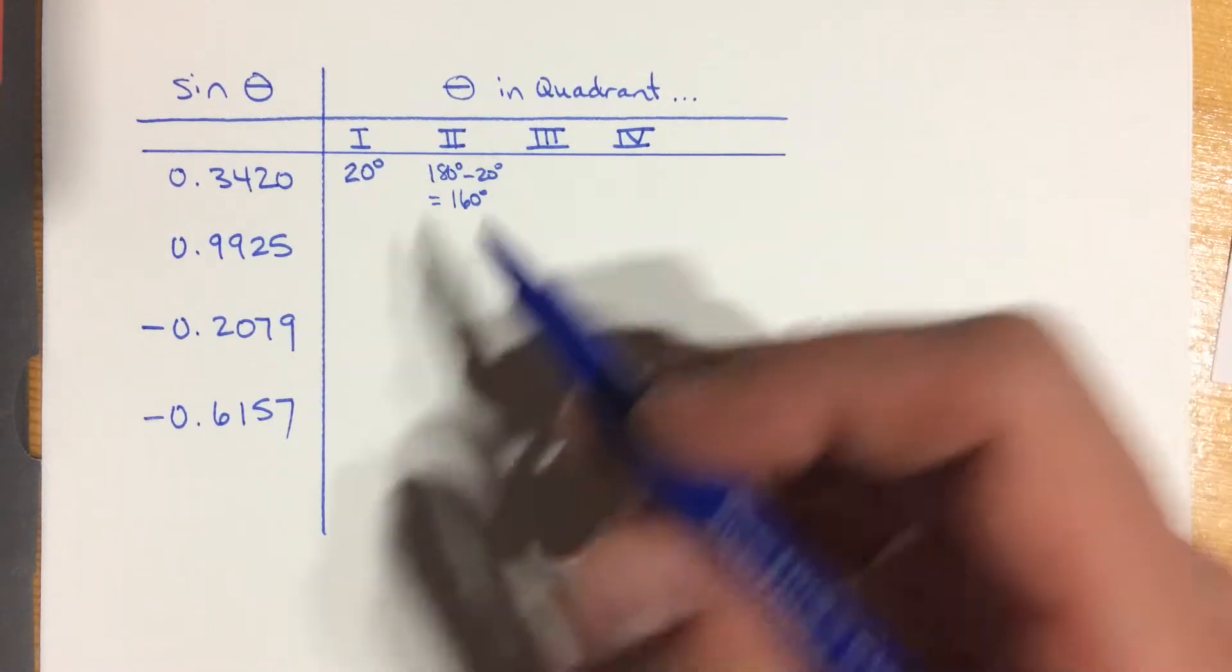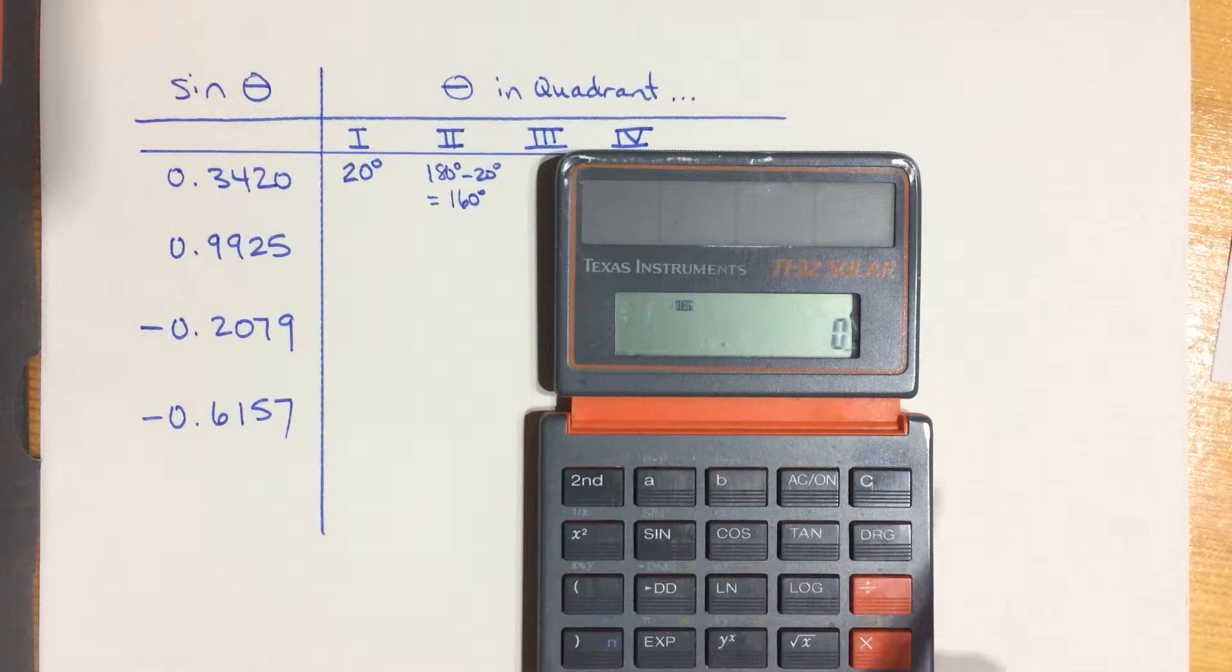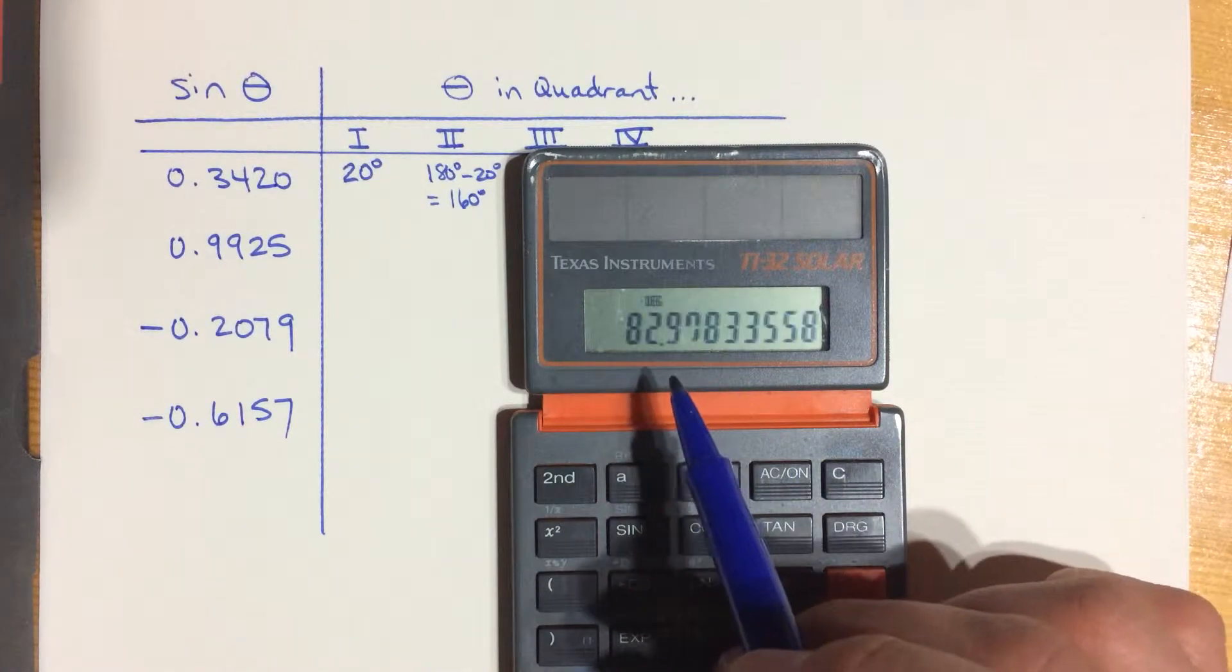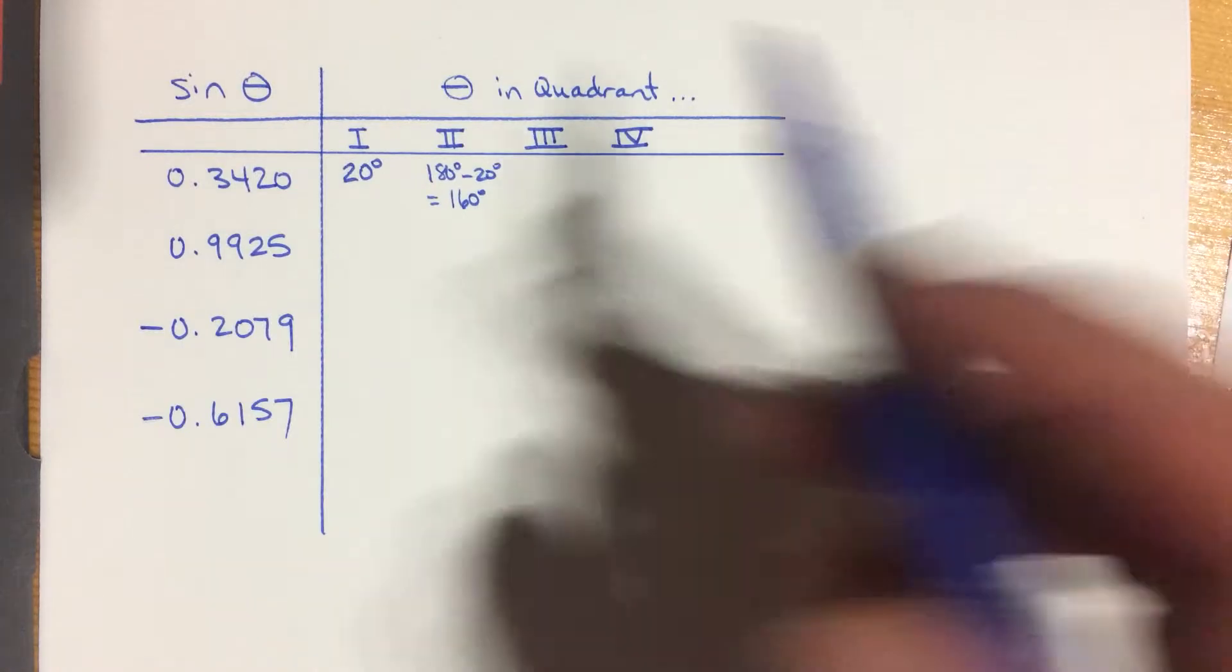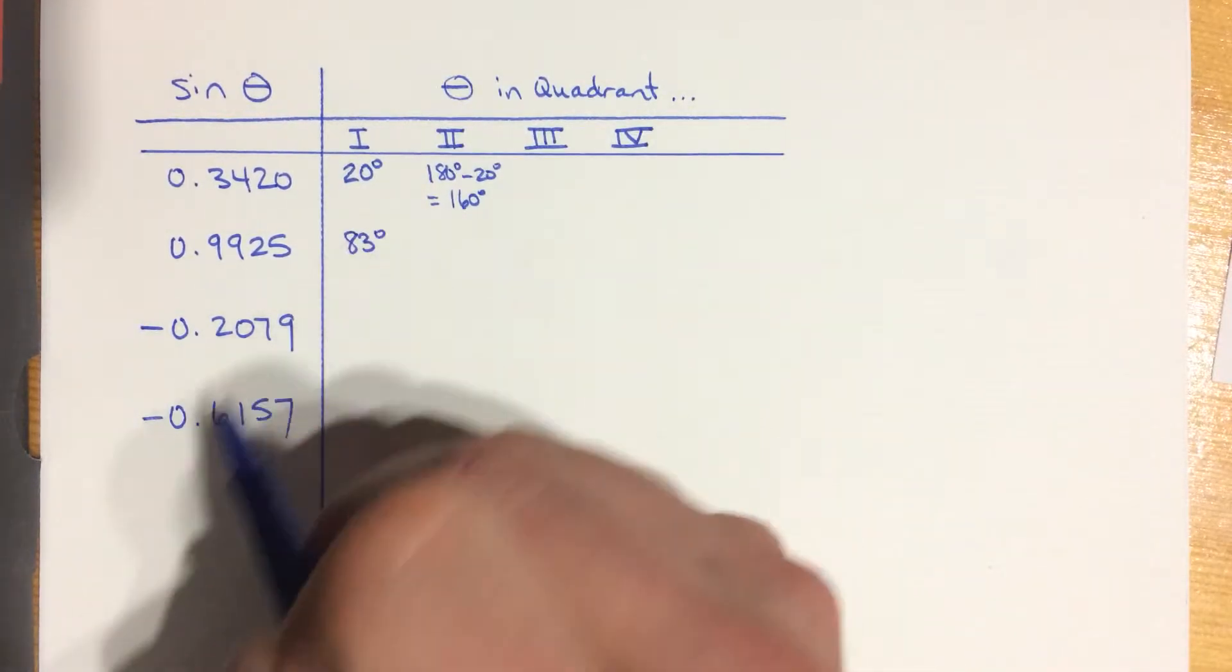So let's try this second one and grab again the superhero of mathematics here. 0.9925 sine inverse tells me that this must be about an 83 degree angle. Well, that's true if it's in the first quadrant. Just use the number as is.